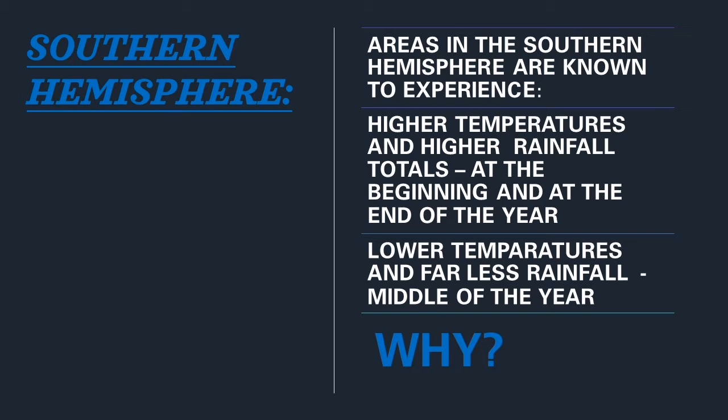Areas in the southern hemisphere — for example places in parts of Africa, the Asian islands, Antarctica, Australia, and the majority of South America — are usually colder in the middle of the year, between the months of March and September, and then get warmer at the beginning and at the end of the year, between the months of October and April.